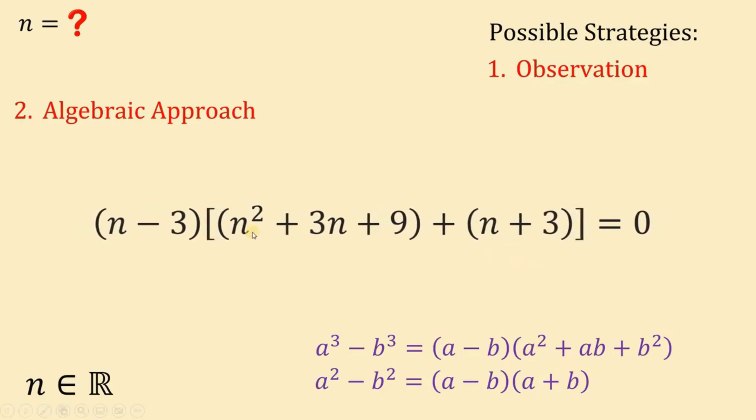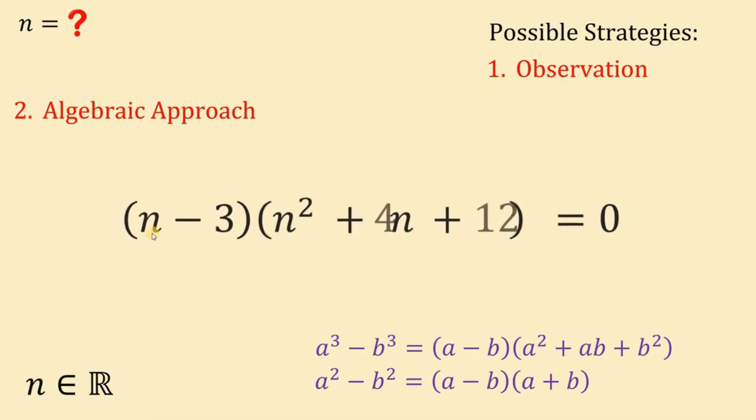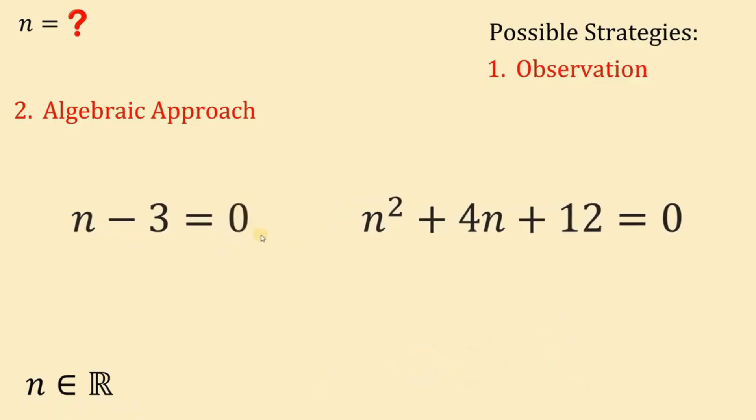Now, let's simplify. We have n squared plus 3n plus 9 plus n plus 3. 3n plus n will give us 4n and 9 plus 3 will give us 12. So we have n minus 3 multiplied by n squared plus 4n plus 12 equals to 0. Now, since it is equal to 0, we can say that n minus 3 equals to 0 or n squared plus 4n plus 12 equals to 0.